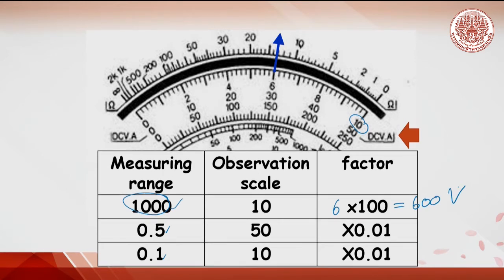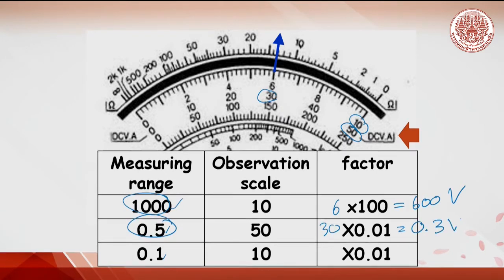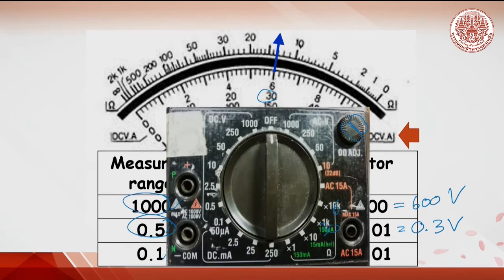If the measuring range is 0.5, look at the scale of 50. After reading, multiply by 0.01 to get 0.3 volts. Finally, after reading, do not forget to turn the selector knob to off to maintain the battery in the multimeter.